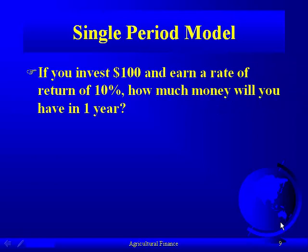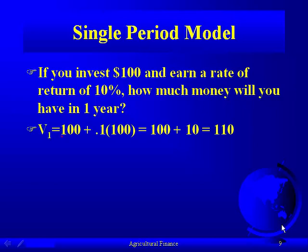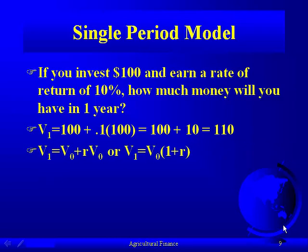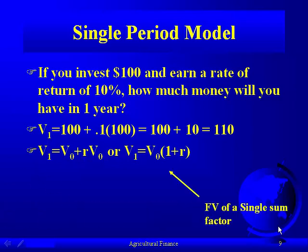We'll keep the numbers very simple so we can do a lot of the arithmetic in our heads. If you invest $100 and earn a rate of return of 10%, how much money will you have in one year? $110 — your principal plus the 10% interest. You can see we take $100 plus $10 interest to give us $110. Recognizing that $100 is the present value, the future value equals the present value times (1 + R) — that is the formula for the future value of a single sum of money.